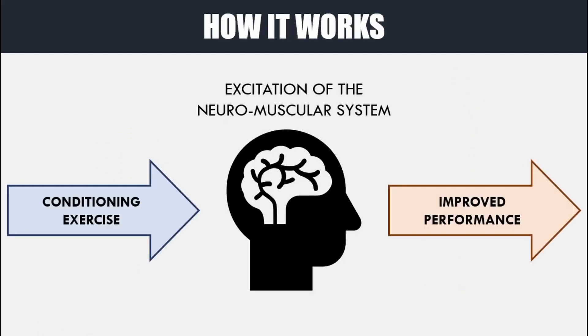So how does this phenomenon work? It's clear in the scientific literature that this is a real strategy to temporarily improve performance, although we still don't fully understand exactly why it works. It's proposed that the conditioning exercise causes an excitation of the neuromuscular system which primes the nervous system to produce more force or at a faster rate. Theories suggest the conditioning exercise recruits high threshold motor units, alters the speed of action potentials, or simply causes the body to produce more force as it expects to be moving a heavy load. Whatever the case, it doesn't really matter as long as it works.